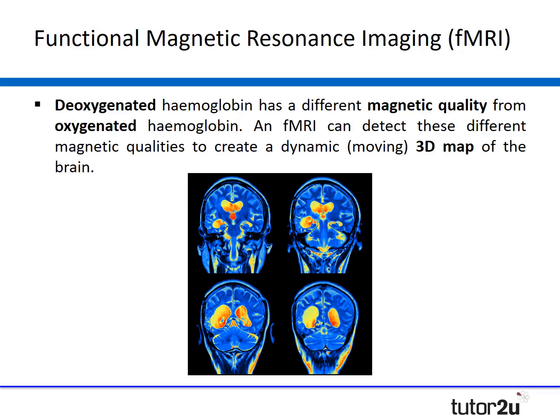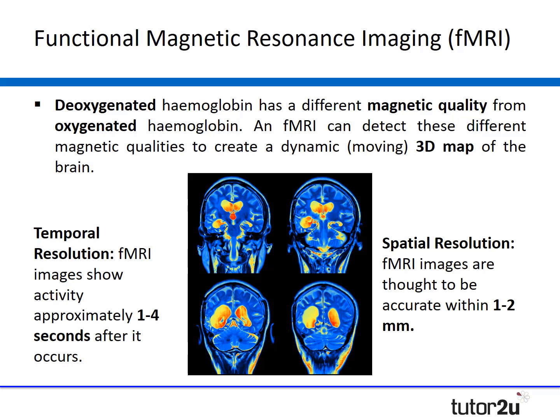There are two important concepts to introduce here that we'll return to when evaluating the different ways of studying the brain: temporal resolution and spatial resolution. In terms of temporal resolution, fMRI images show activity approximately one to four seconds after it actually occurs. However, fMRI images are thought to be accurate within one to two millimetres, making it a very spatially accurate technique for studying the brain.